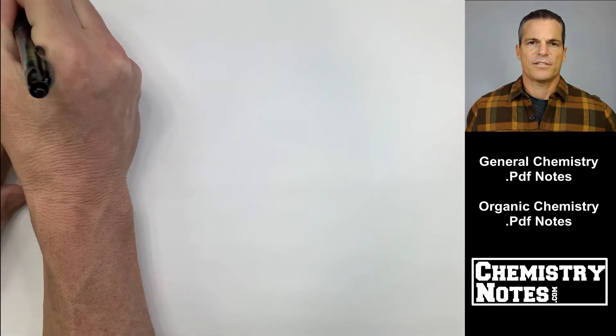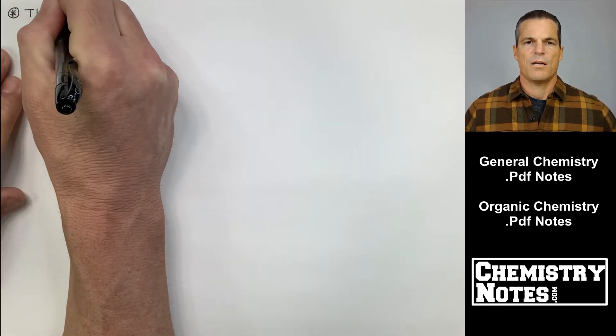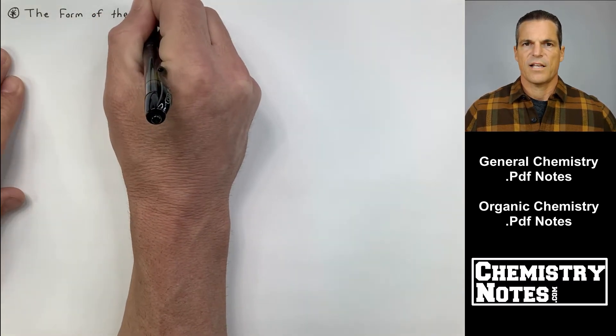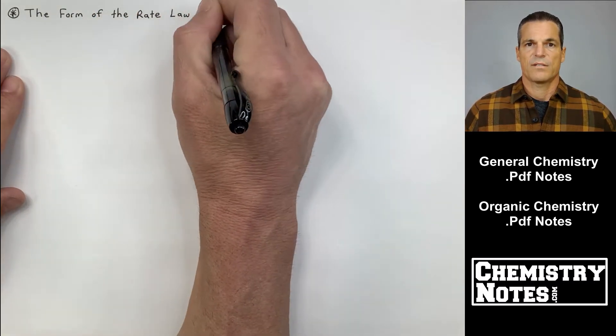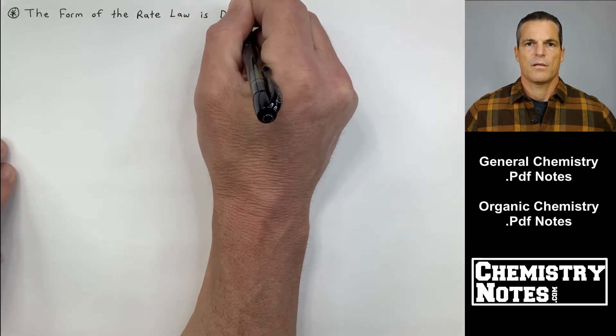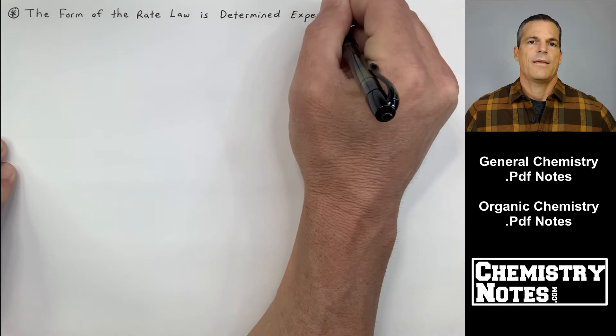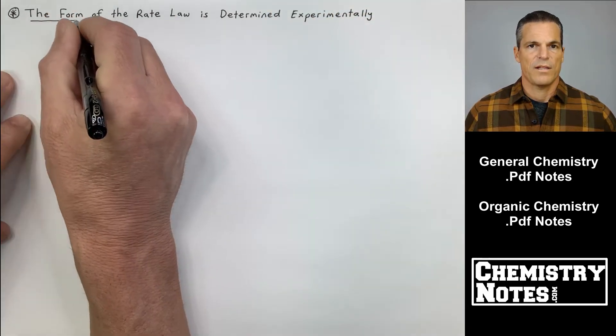Hi guys, we're back again. Justin with chemistrynotes.com and we are on video number three of section 12. Section 12 is chemical kinetics. It's a big section with lots of videos to cover. This is our third video and we're going to continue our discussion with differential rate law.